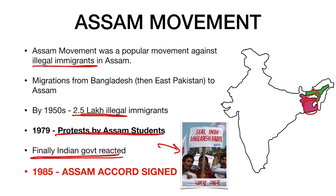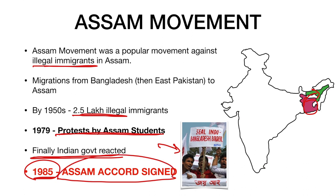In 1985, this unrest ended, student protests ended, and finally the Assam Accord was signed. It was signed between the leaders of AASU and AASP and the government of India.